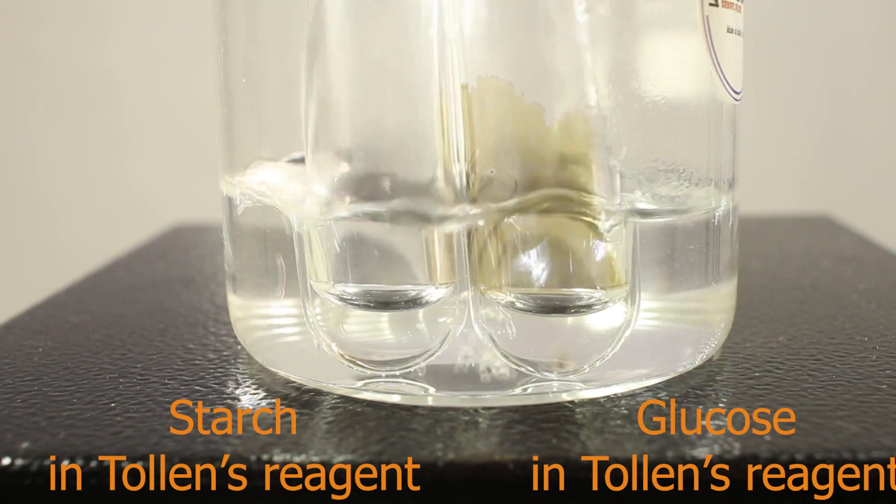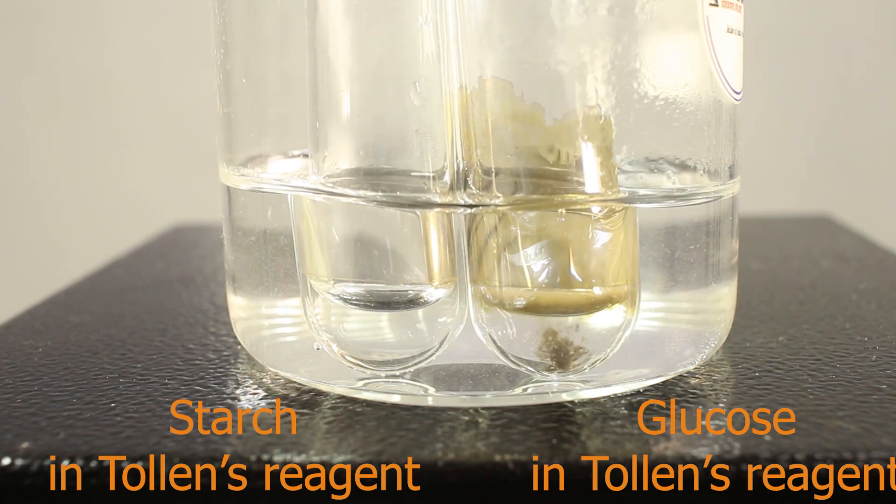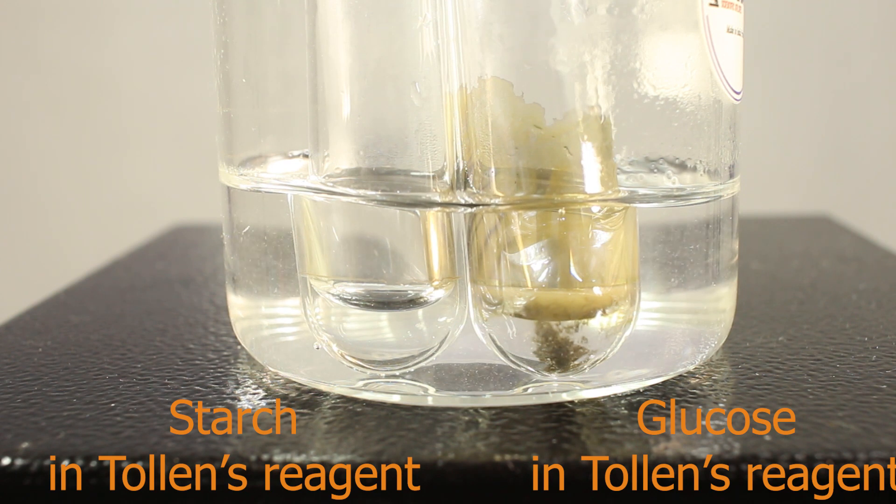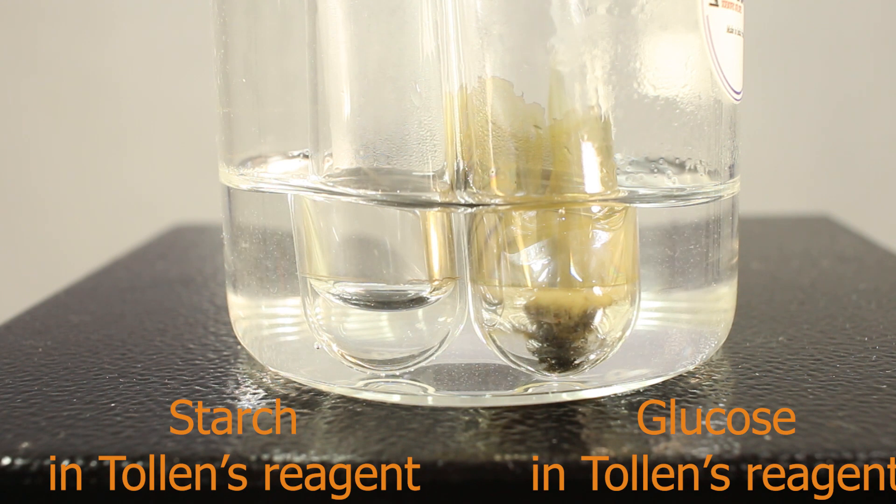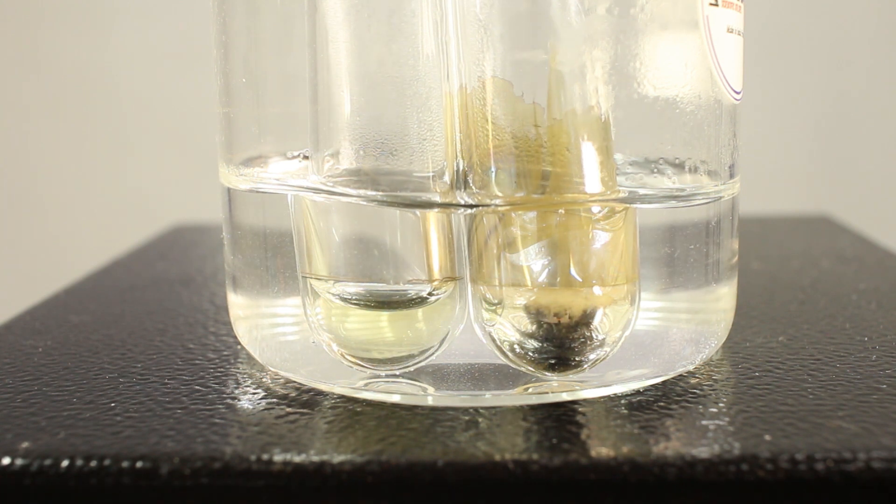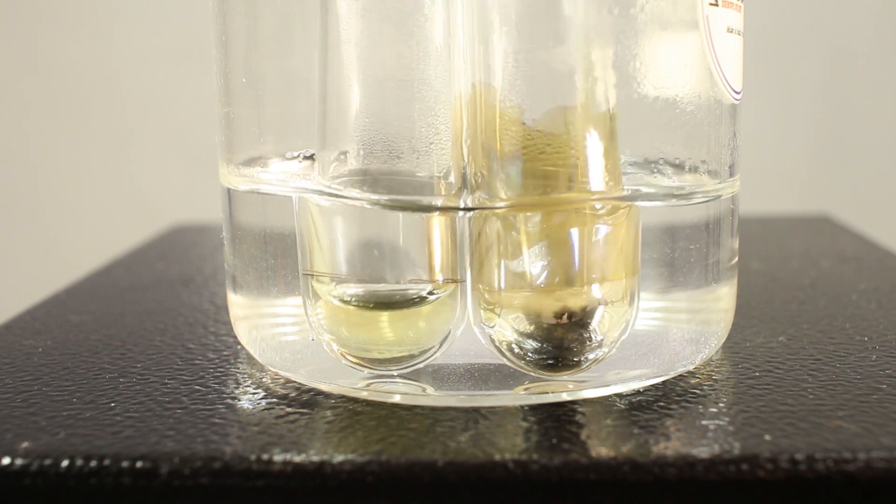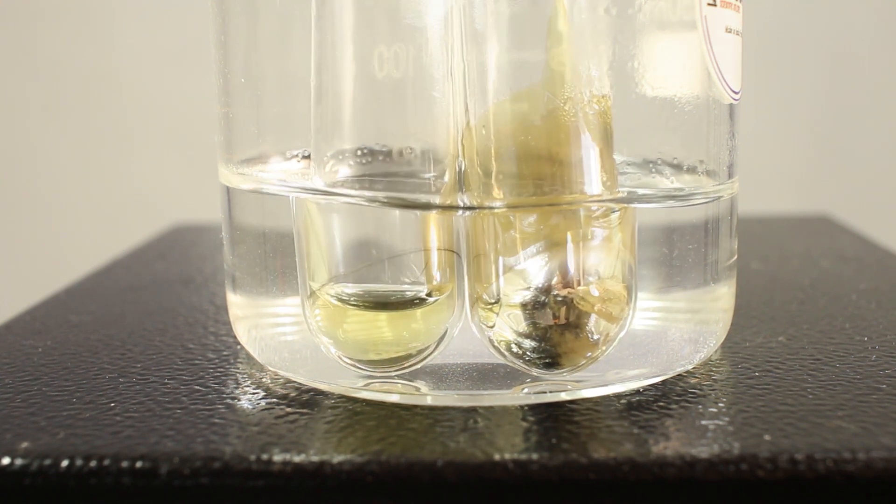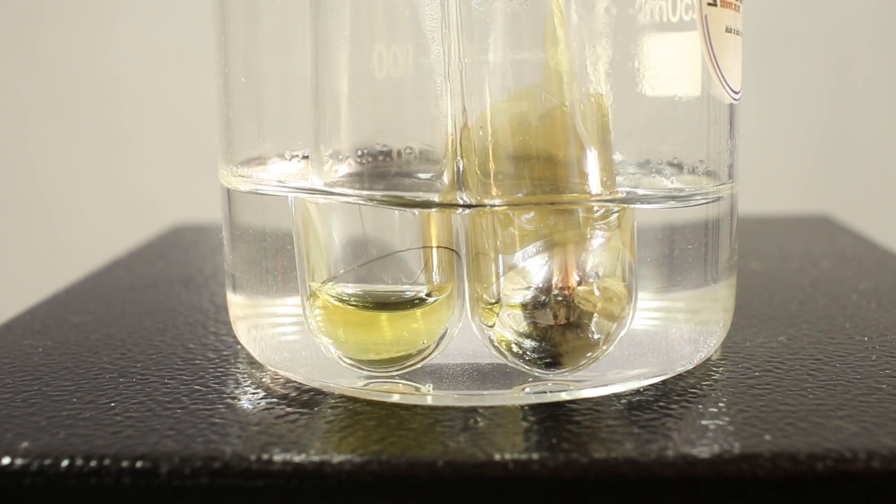Now, glucose reducing silver ions to metallic silver. Grey precipitate is forming, and also some silver forming a layer on the test tube. Obviously, on the right, where you see positive result. Silver mirror is formed. Silver mirror test, Tollens reagent test sometimes is called.